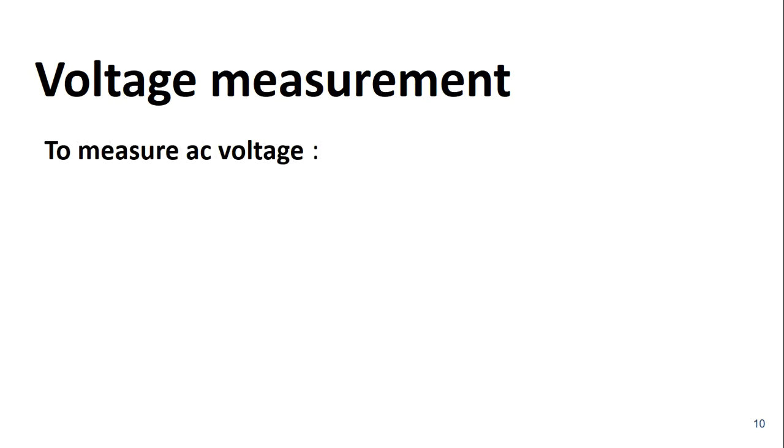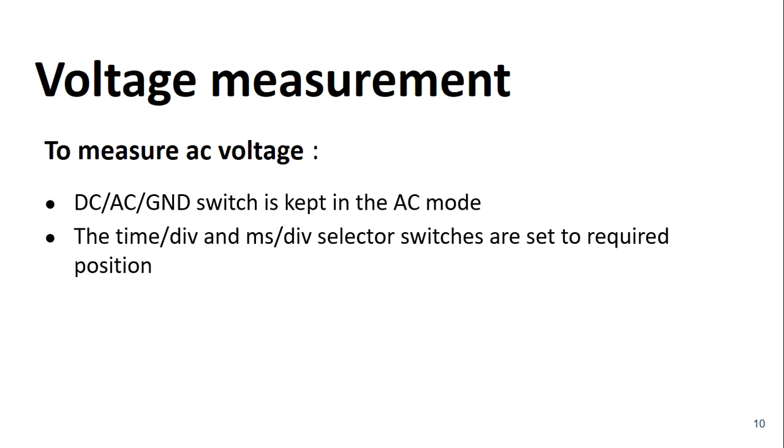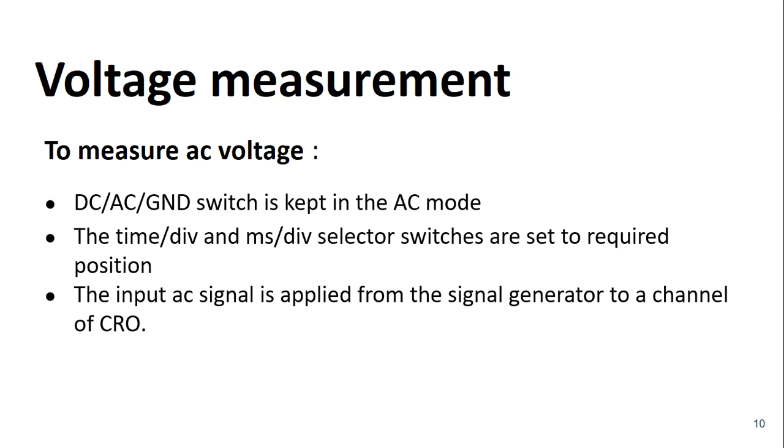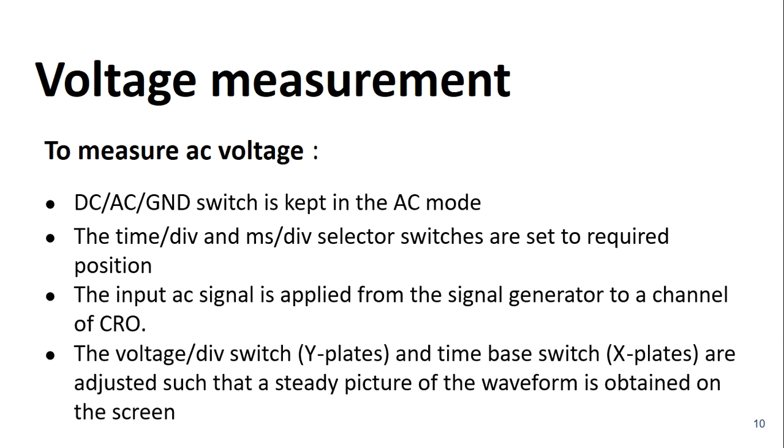Now we shall look into the measurement of AC voltage. For this, preliminary adjustments are made as explained earlier but the DC ground switch is to be kept in the AC mode. To measure the alternating voltage of the sinusoidal waveform, the AC signal is applied across the vertical plates. The volt per division switch and the time base switch are adjusted such that a steady picture of the waveform is obtained on the screen. If the picture is steady then only we can measure according to our need.